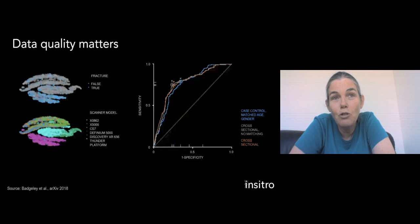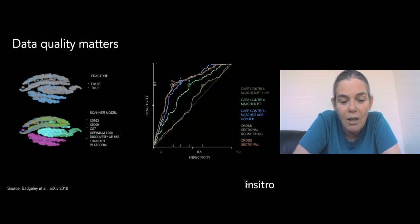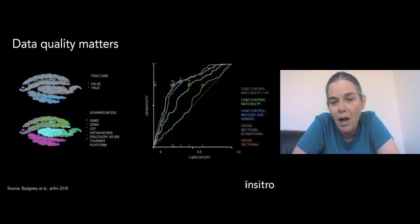That is, when you correct for which hospital and which scanner took the scan, you get random performance, which basically suggests that what was happening is that the machine learning model was using artifacts from the scanner to identify which hospital took the scan. And there is simply a different population in these hospitals giving rise to a different prevalence of fracture versus non-fracture. So data quality really matters.